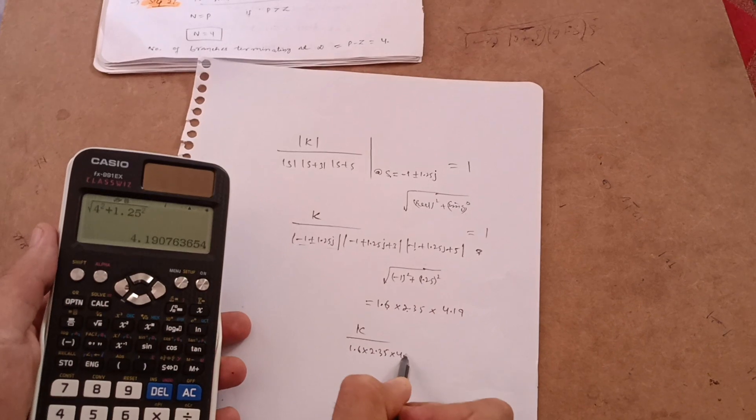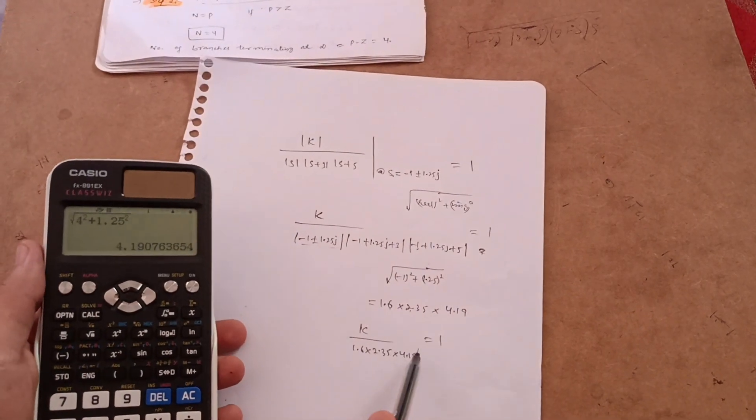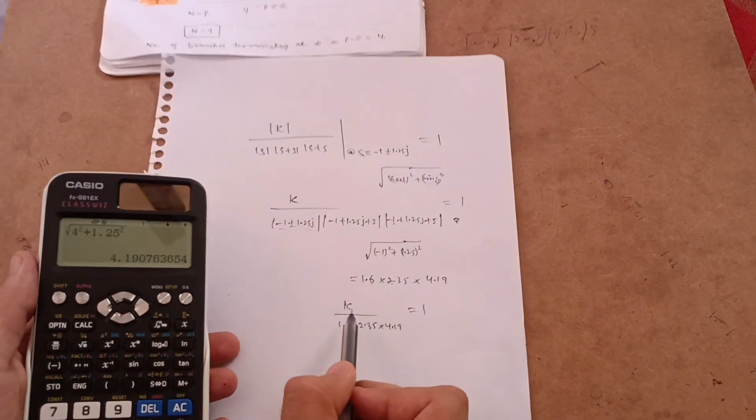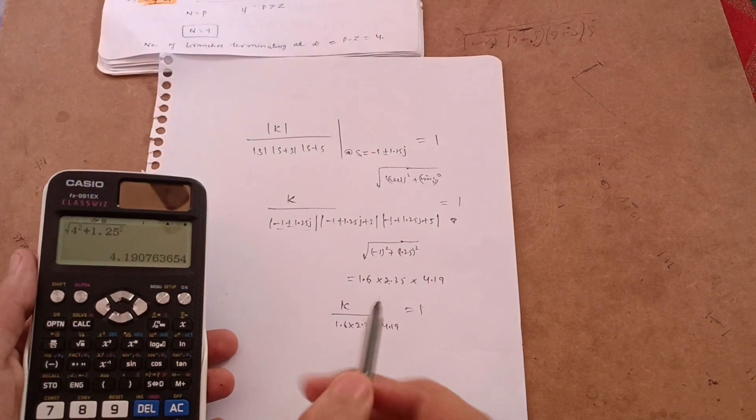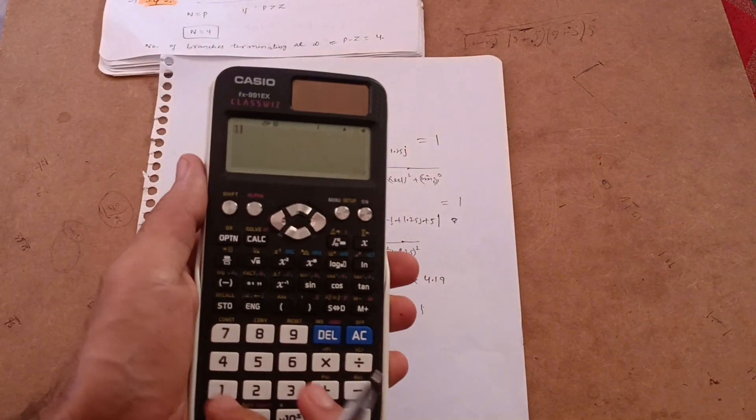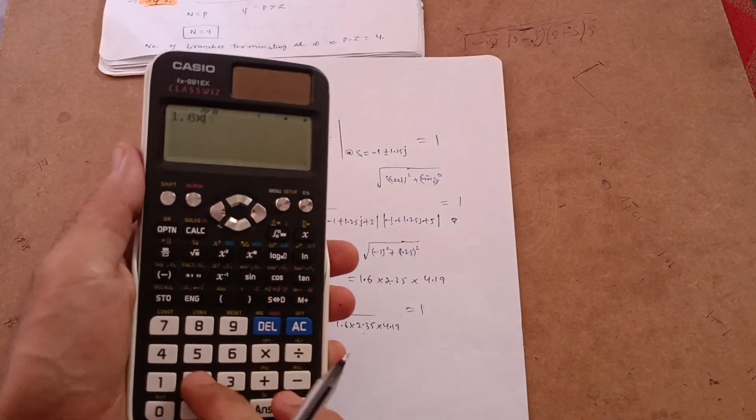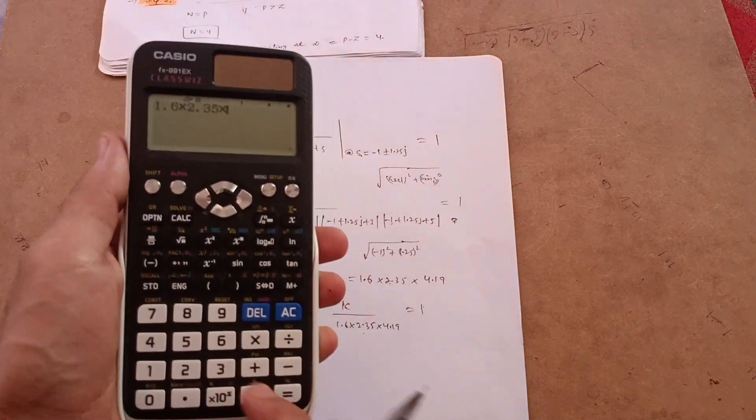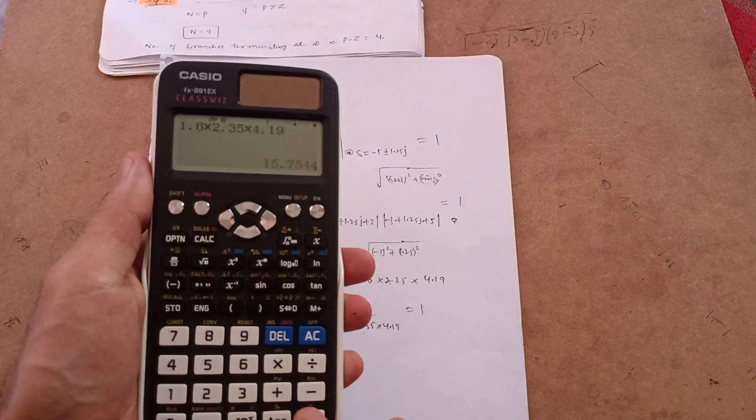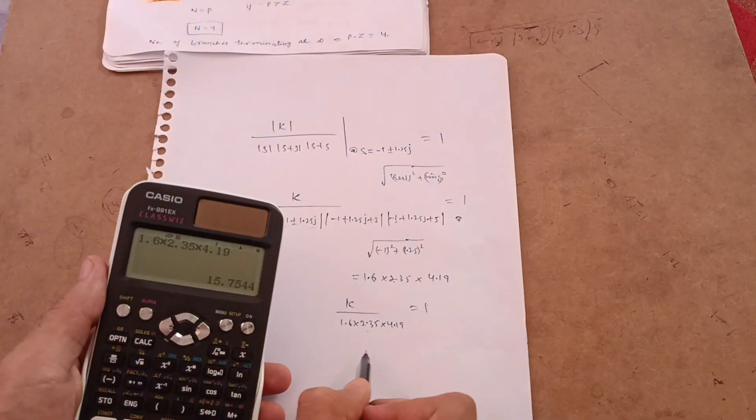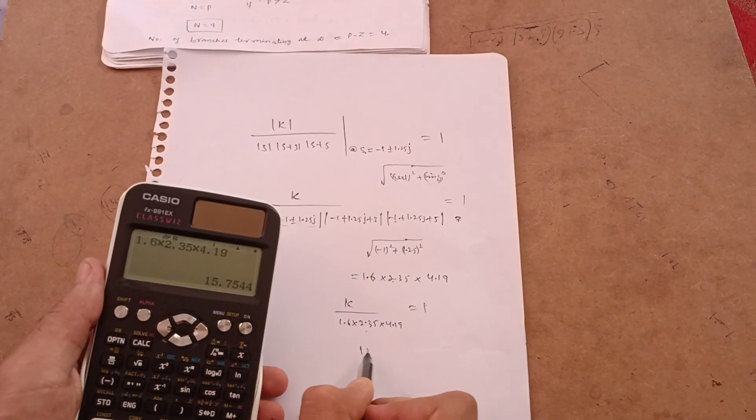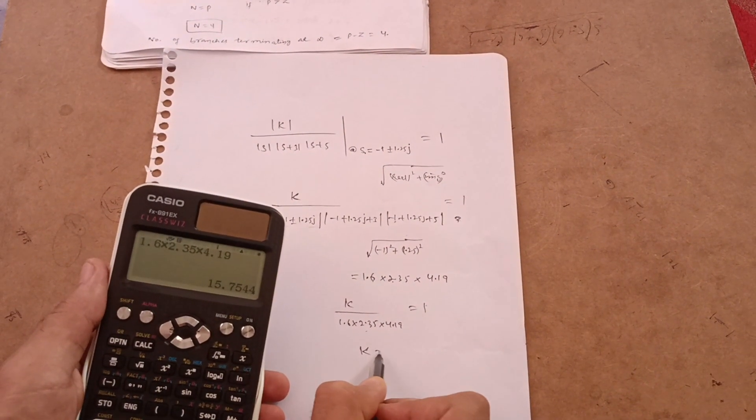1.6 into 2.35 into 4.19 is equal to 1, as magnitude condition is always equal to 1. So k is equal to 1 into this term. So you just calculate it, 1.6 into 2.35 into 4.19. Yes, sorry, actually the value is 15.75. I have written down the correct value over there. So k is equal to 15.75.